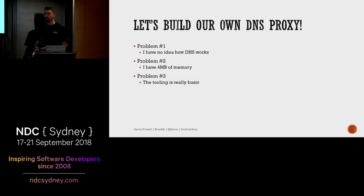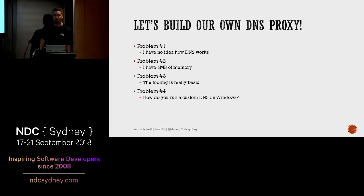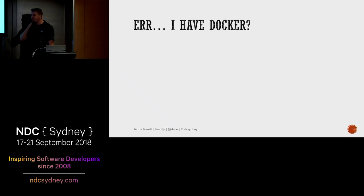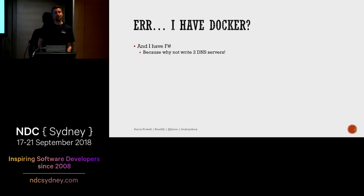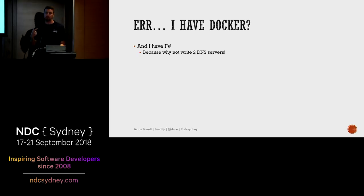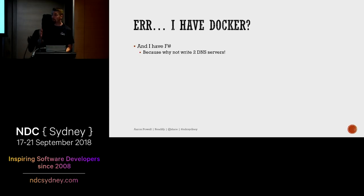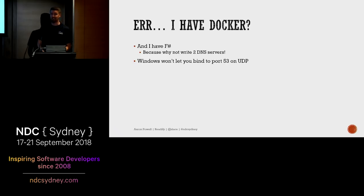Maybe I can just build one on Windows. Wait — how do I run a custom DNS server on Windows? This is starting to become a little bit more challenging, but I've had this idea and I have to work out how to solve it. So I've got Docker and I've got F# — why build one DNS server when you can build two? I prefer developing in strongly typed languages when I don't really understand the thing I'm trying to build — there's a lot to be said for type safety when dealing with binary streams. And by putting it in Docker, I don't have to worry about the fact that I can't bind to port 53 on UDP in Windows. Did you know DNS runs on port 53 UDP? I didn't, not until a couple of weeks ago.